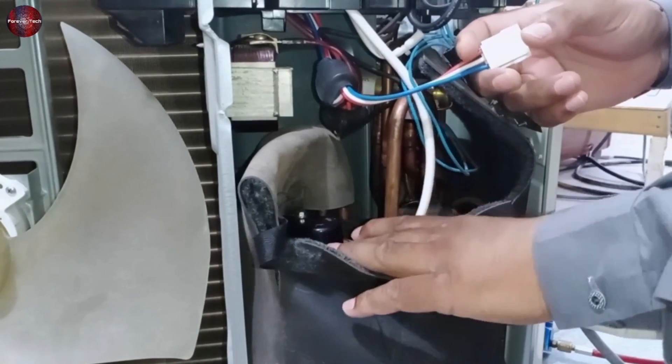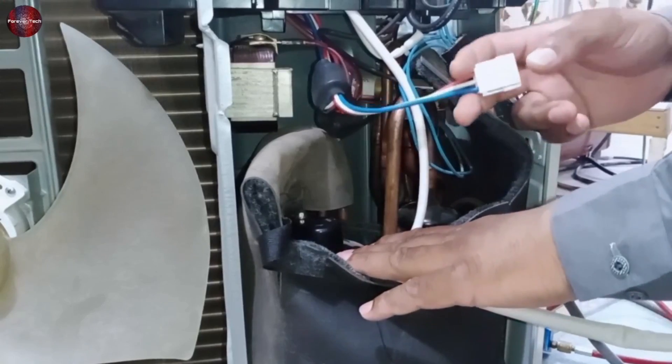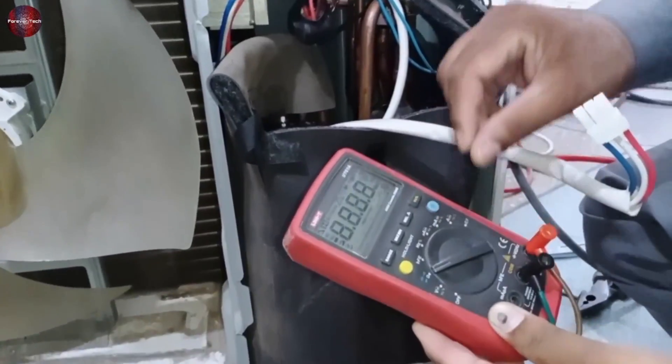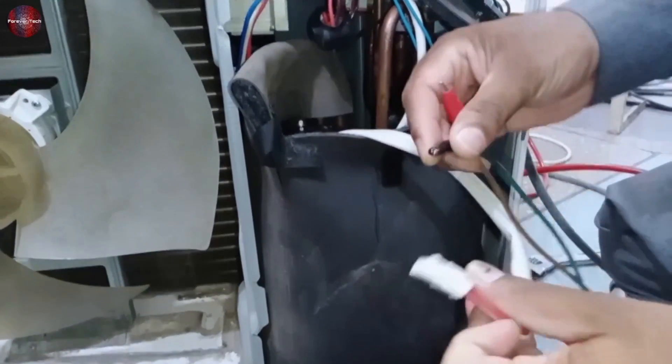And this test will be done after separating the compressor from the PCB. The compressor could not be tested with the PCB attached. Take a multimeter and set it to ohms. After this, attach the probes of the multimeter to compressor terminals.